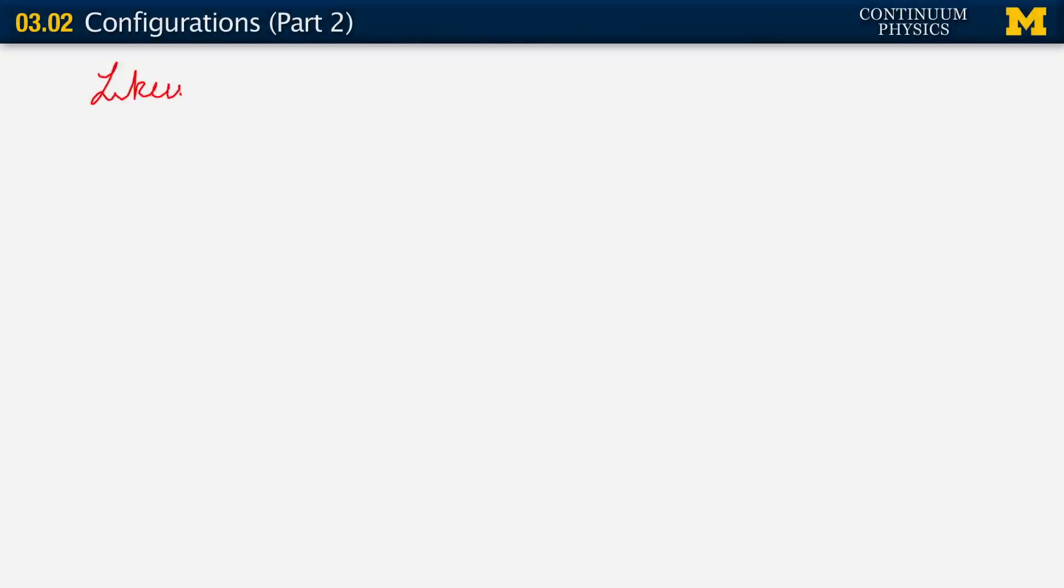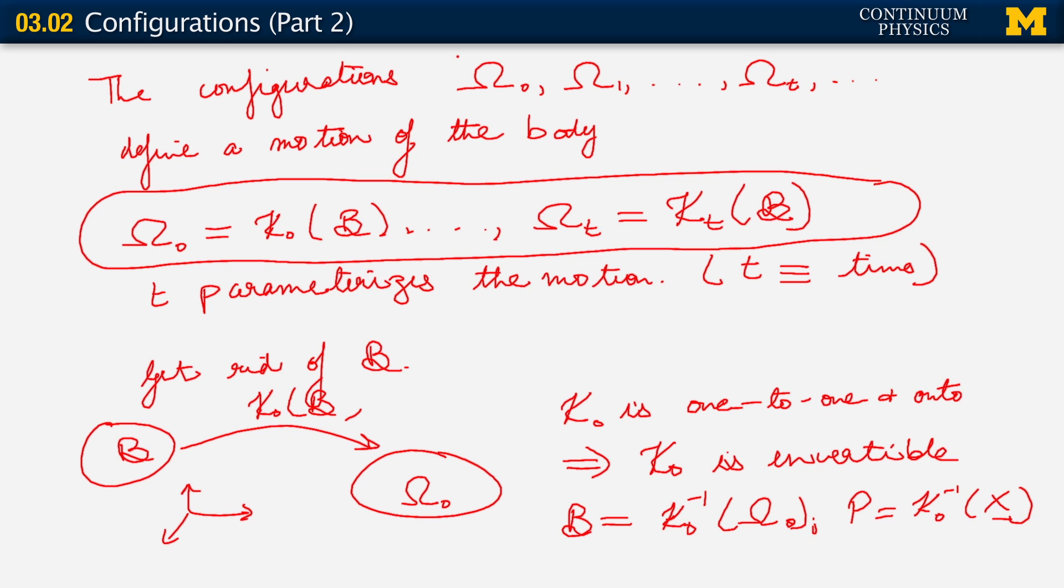Likewise, kappa t is invertible. And therefore, we could have written this line here for any of the other maps, kappa sub t. But we're going to do it for one of them. We have to pick one of them, because they're all really equivalent if we think about it. All of them are configurations. There's nothing special about any one configuration. We're going to pick one of them, however, somewhat arbitrarily.